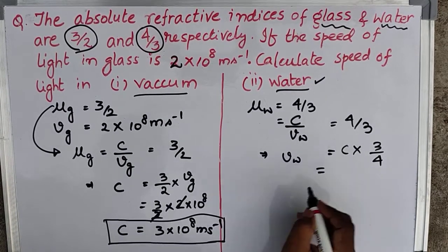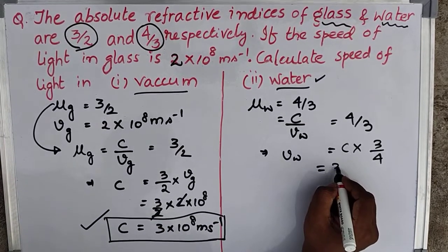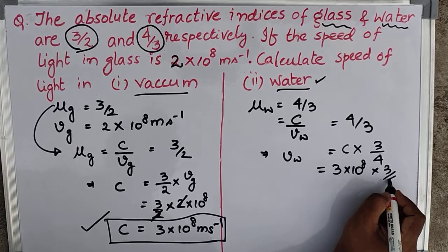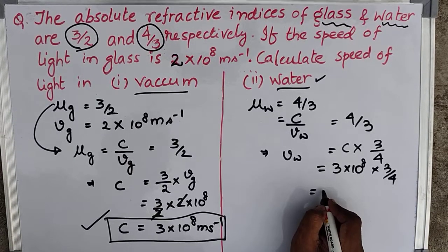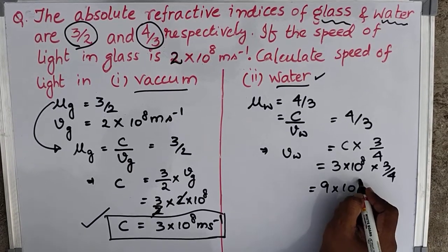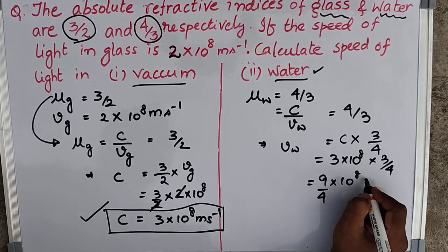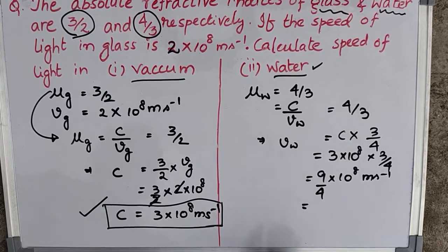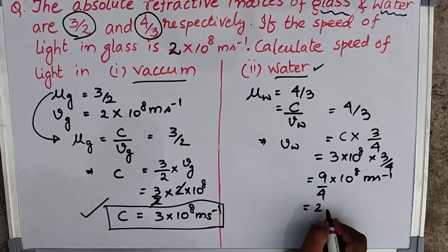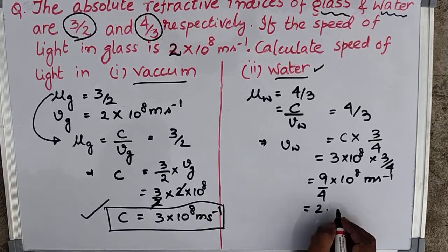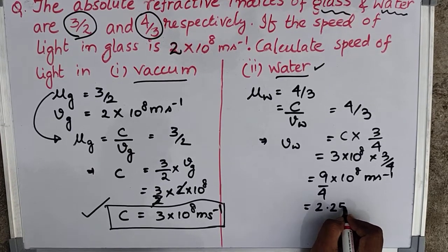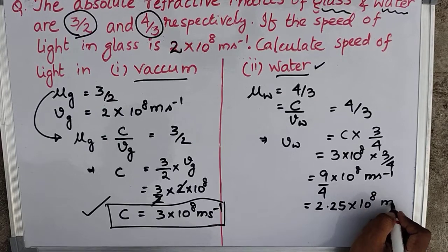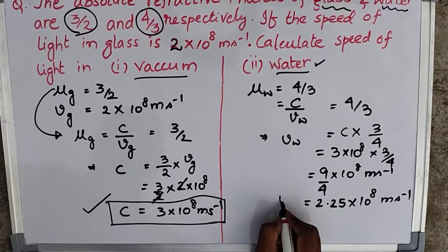The value of C we found is 3×10⁸, so speed of light in water = 3×10⁸ × (3/4) = 9×10⁸ / 4 meter per second, which equals 2.25×10⁸ meter per second. So this is the velocity of light in water.